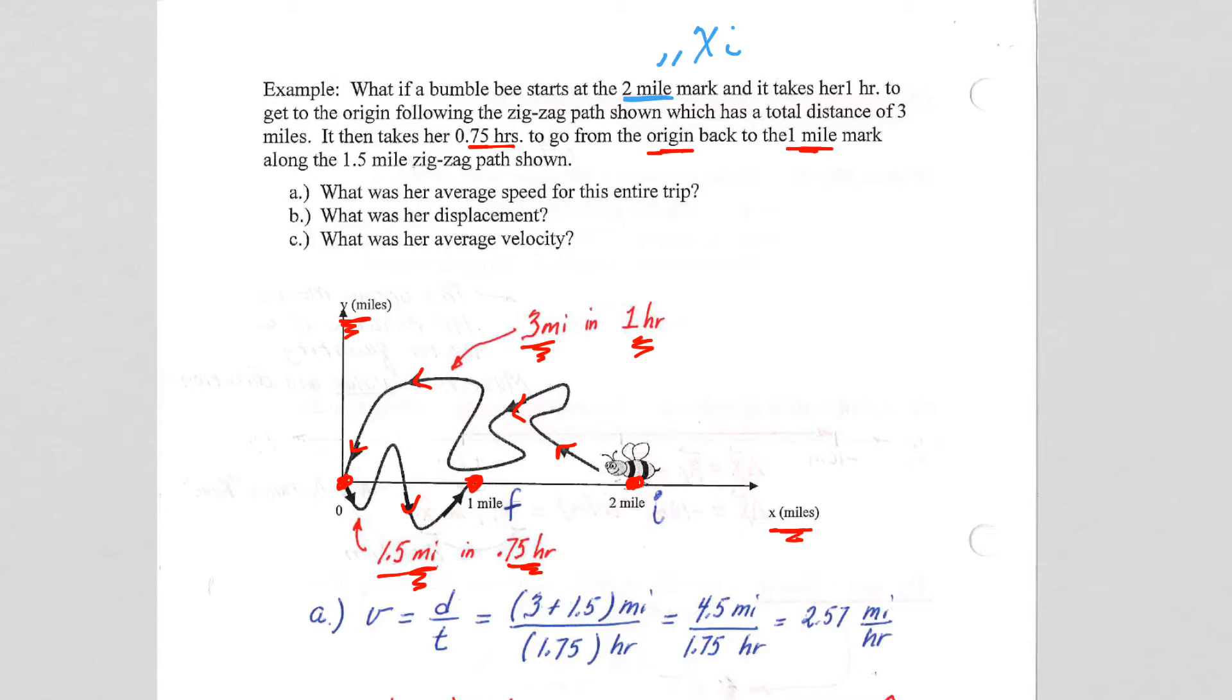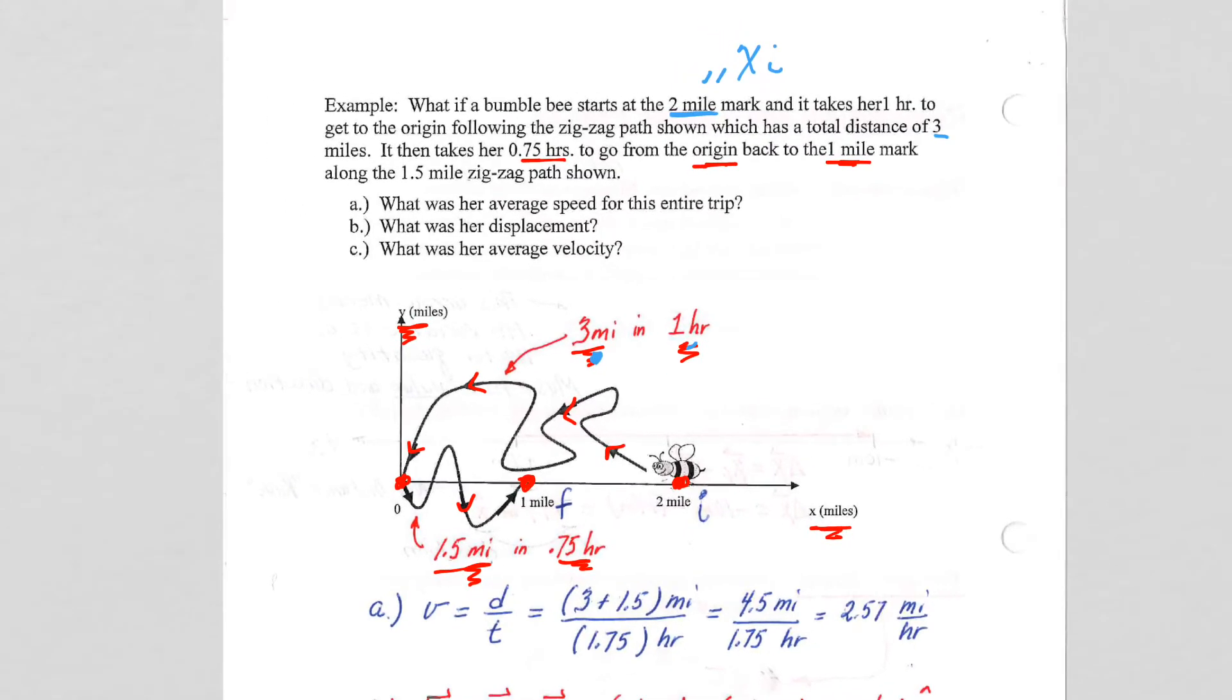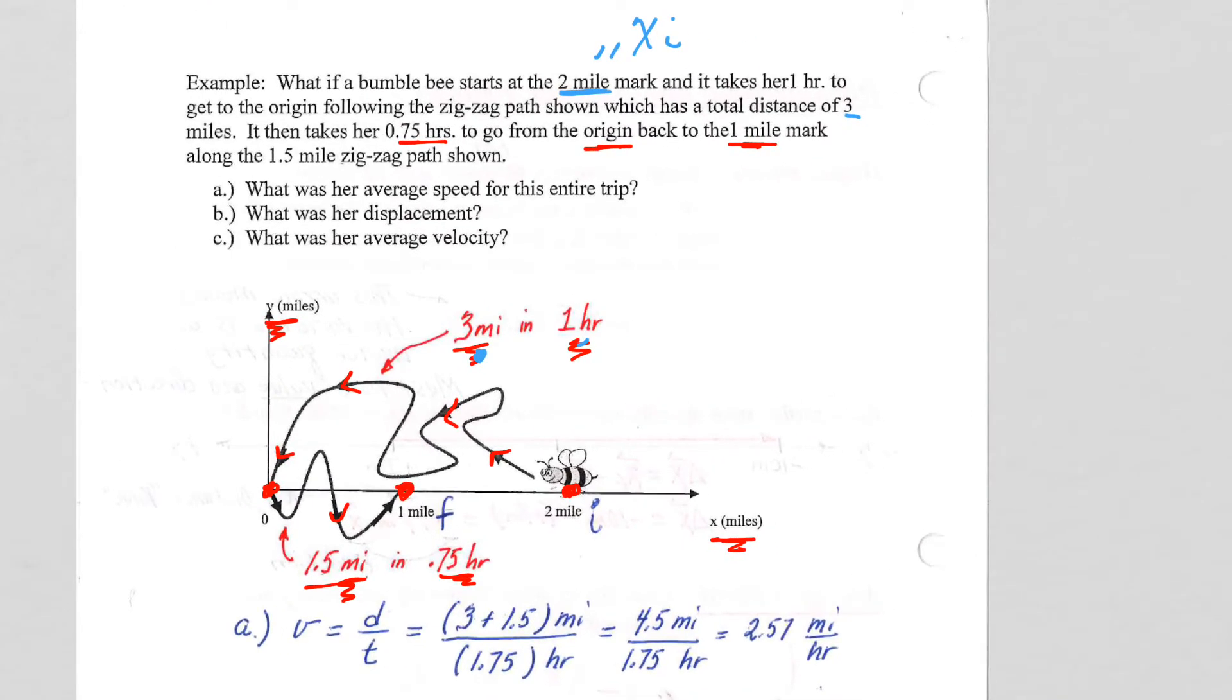Now, she travels three miles in one hour to get to the origin. That's not her final position for this problem, so I'm not going to mark that as x final. The three miles she travels, however, I'm going to mark as a distance d1. So that's the distance she travels on the first part of her trip. It takes her one hour to do that, so that I'm going to mark as t1. It then takes her 0.75 hours. That I'm going to mark as a time t2 to go from the origin back to the one-mile mark, and that's going to be her x final on the x-axis.